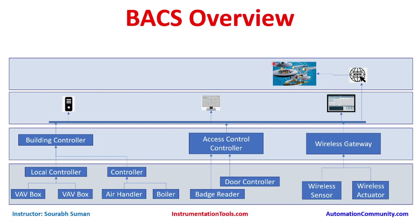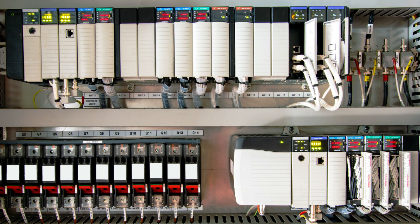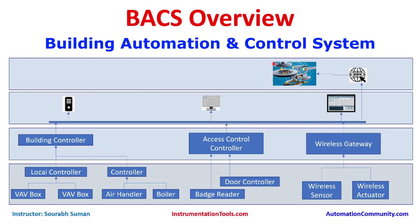Older buildings and equipment may also have been retrofitted with new systems. Some of the most common functions of building automation are maintaining environmental conditions for occupant comfort, reducing energy consumption, reducing operating and maintenance costs, increasing security, recording historical data such as temperature and humidity, and performing general equipment monitoring.